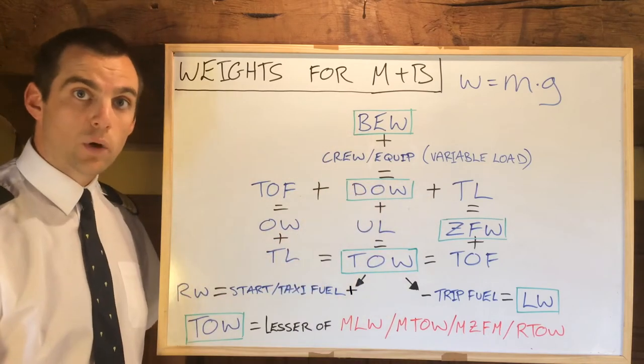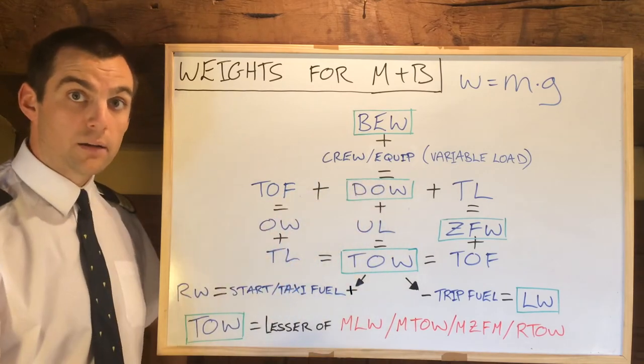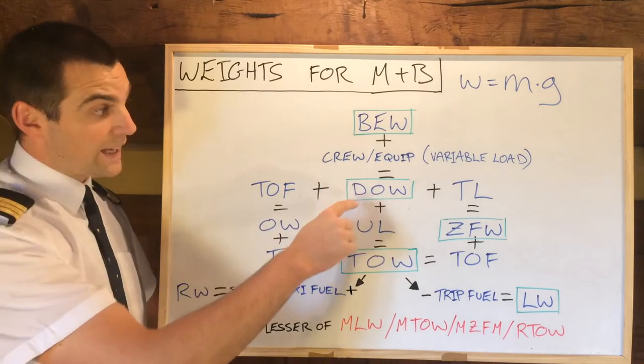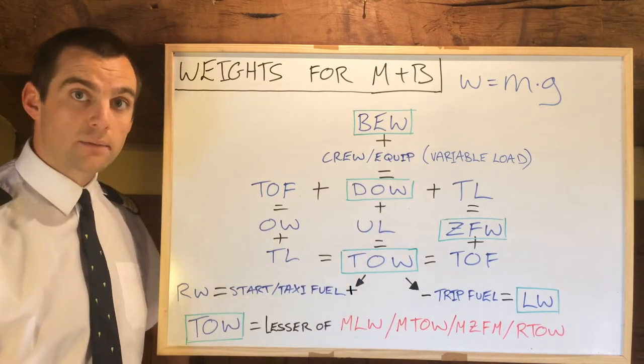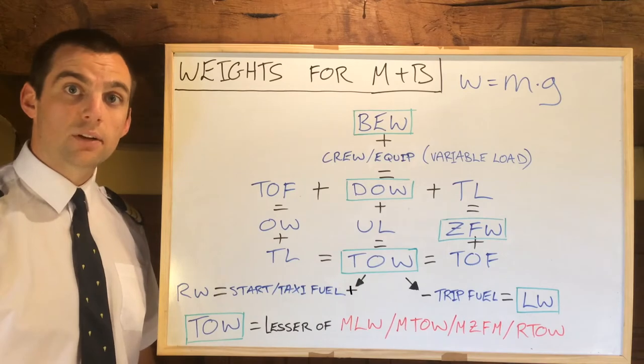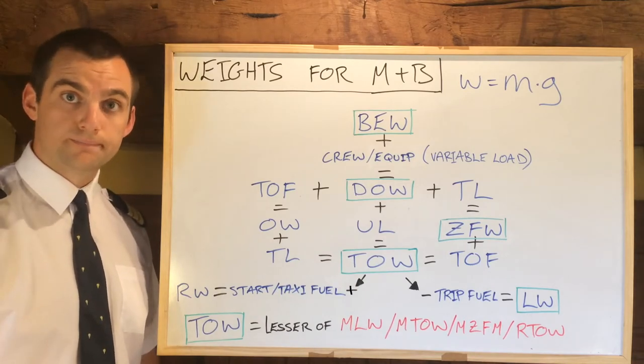Next, we add the crew and equipment — this is sometimes called the variable load. That gives us the dry operating weight, which essentially means the aircraft is ready to operate except for the traffic load and the fuel.